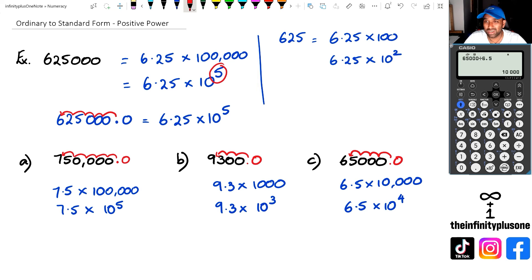Now let's say you're not sure if you did that right. What you could do is go into the calculator. I'm going to look at question A and put down 7.5 times 10 to the power of 5. I'm getting 750,000, so I've done it right. For question B, I'm going to go 9.3 times 10 to the power of 3, and that's giving me 9,300. And finally, 6.5 times 10 to the power of 4, and that's giving me 65,000.